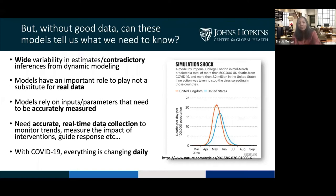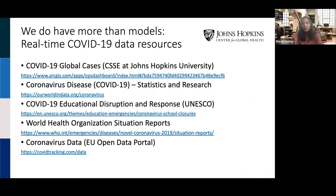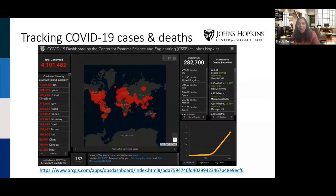In addition to the models, there are a number of fantastic resources that have been stood up relatively quickly. Many of these you probably are already familiar with and perhaps check every day. For example, the Hopkins COVID tracker, which is one of the earliest ones out there — it tracks cases and deaths in every single country, is updated in real time, and can give you a snapshot of what's happening at a particular moment in time.